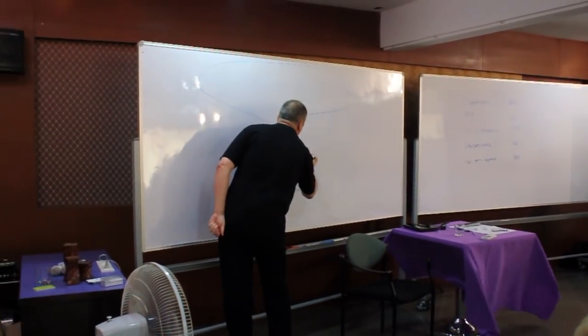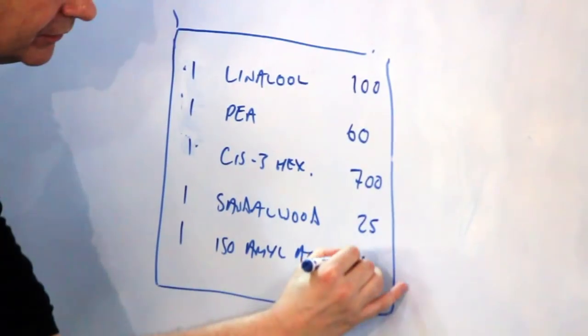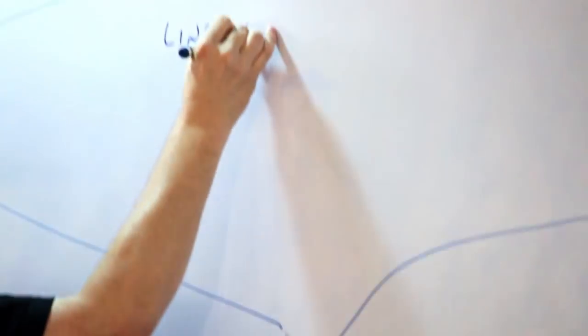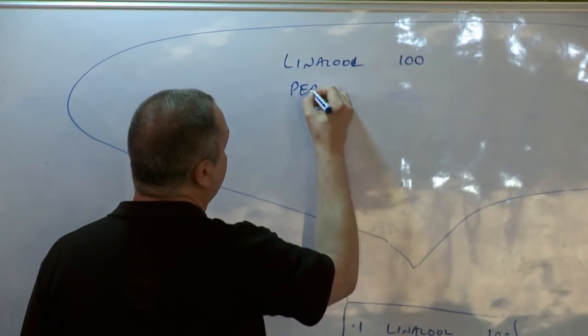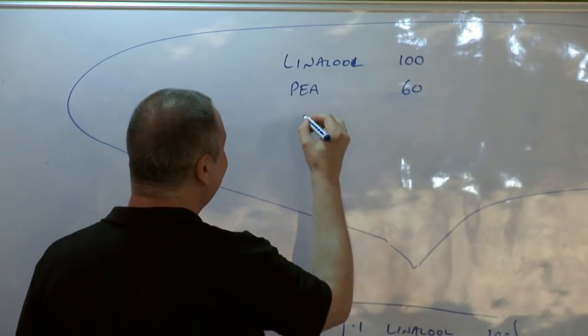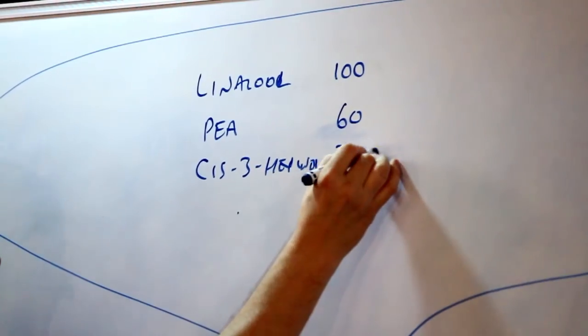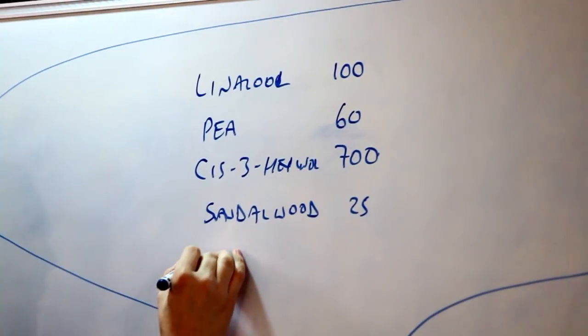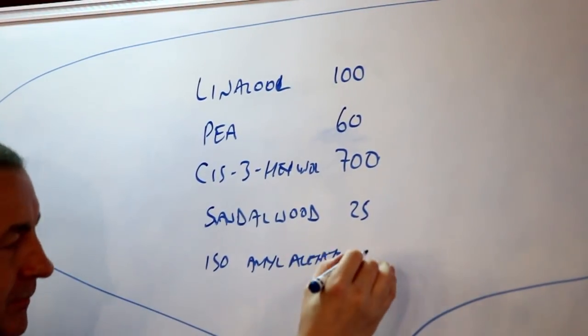Actually, the impact: 100, 60, 700, 25, 800. One times 100, we'd have linalol 100 parts, PEA 60, cis-3-hexanol 700, sandalwood 25, isoamyl acetate 800.